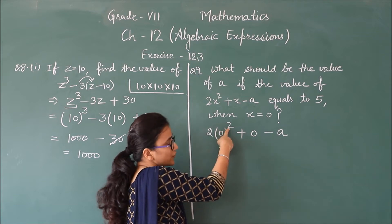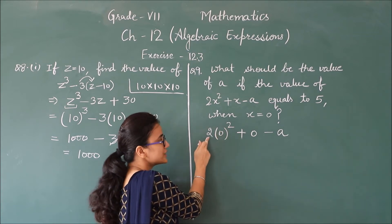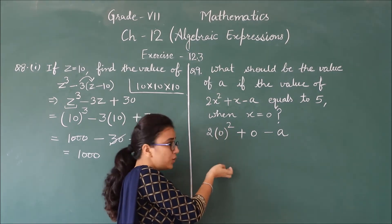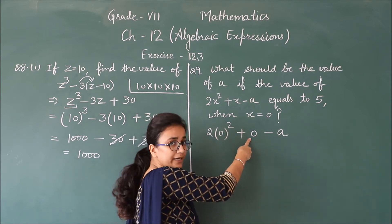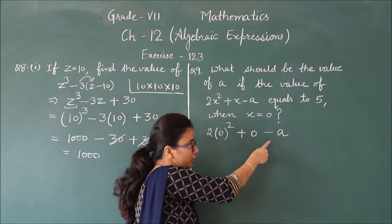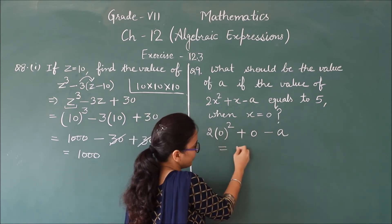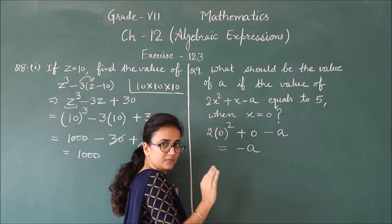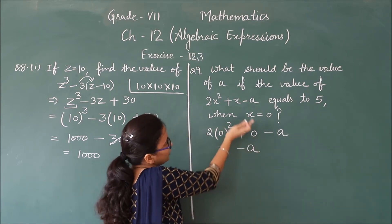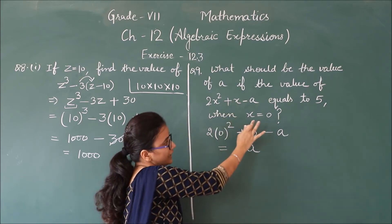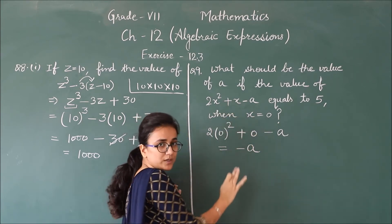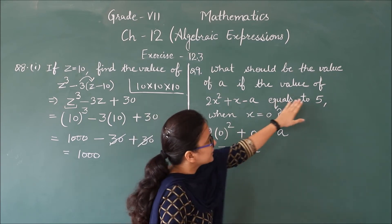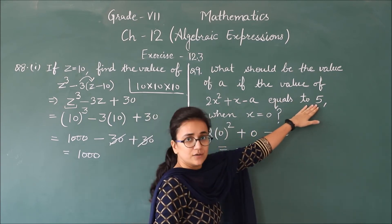So first we put x equals 0 into the expression as it is. Now 0 squared will give 0, and 0 multiplied by any number is 0. So this term becomes 0, and this also becomes 0. So we are left with minus A. This is the value of the expression at x equals to 0. But this value is given to us as 5.